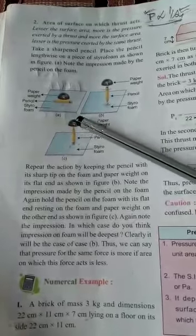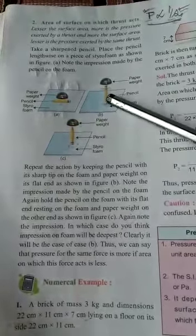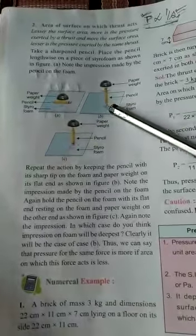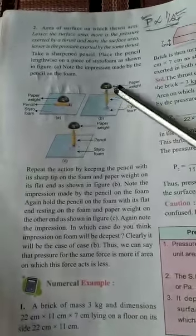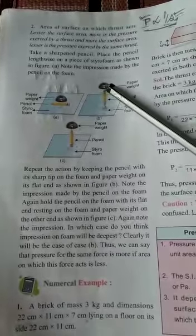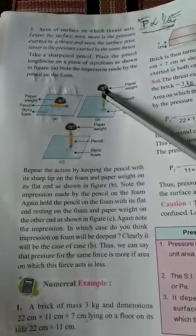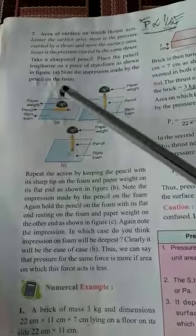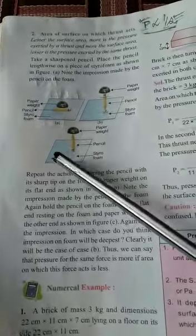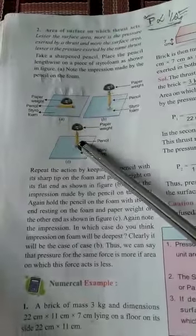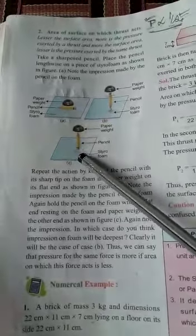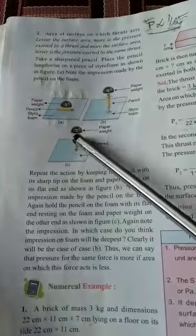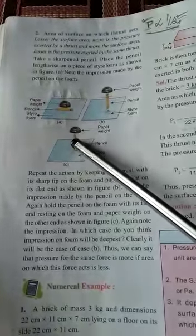Firstly, we have to place sharp pointed end of the pencil towards styrofoam and place the paperweight over the blunt end on the pencil. And then we have to reverse the condition. Now, we have to place the blunt end of the pencil towards styrofoam and paperweight towards the sharp pointed end of the pencil.